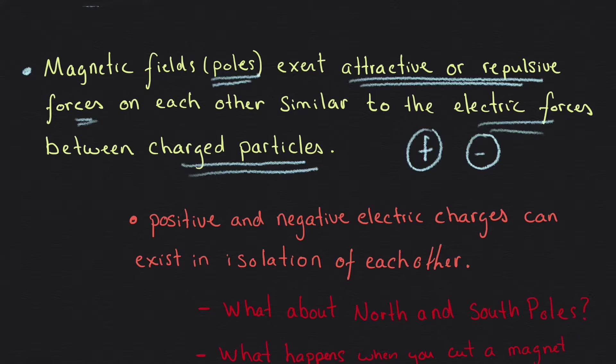Now, the idea is that the magnetic poles will have a similar attractive or repulsive force depending on what pole you have. So you can have similar or same poles or opposite poles.